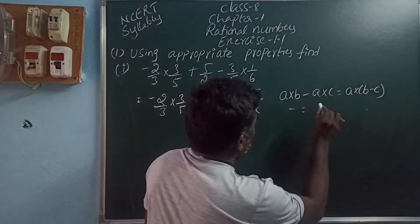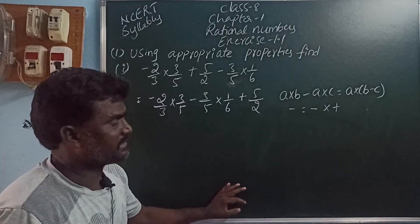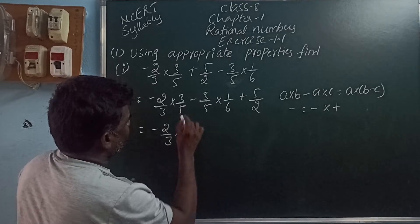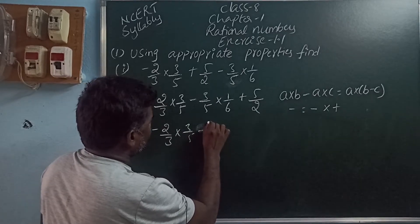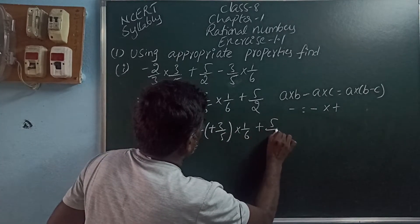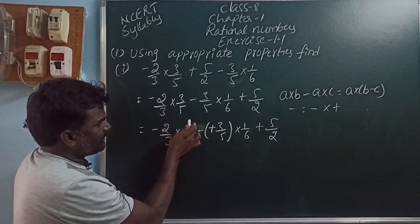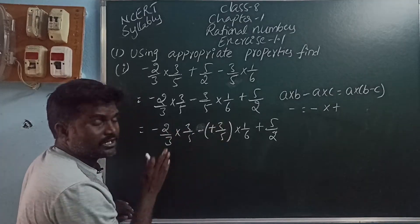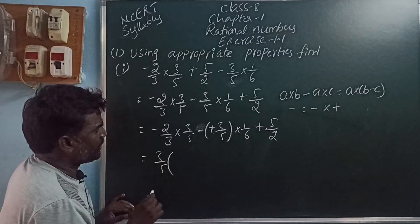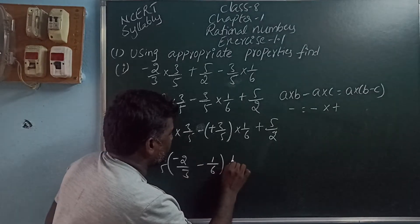The minus we can write as multiples: minus into plus is minus, plus into minus is minus. So here, minus 2 by 3 into 3 by 5. This minus we can write as minus of plus 3 by 5 into 1 by 6 plus 5 by 2. The common here is 3 by 5. Here also we can take out 3 by 5, so 3 by 5 is taken outside by using the distributive property: minus 2 by 3 minus 1 by 6 plus 5 by 2.